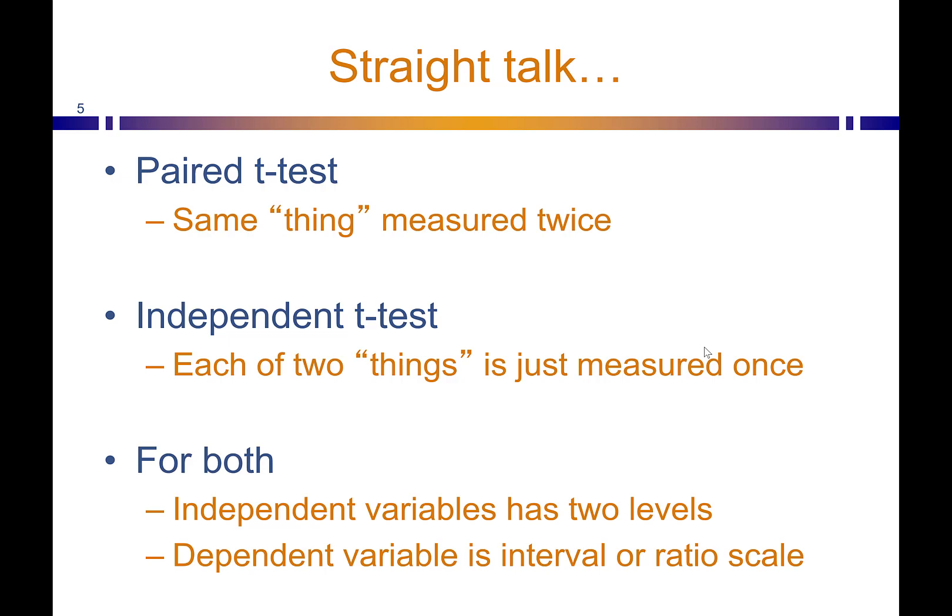This is different from independent samples t-tests, where two groups are each just measured once. For instance, men are measured and women are measured — that could be an independent samples t-test. There are even ways to set up this super shopper program as independent samples. For both of these tests, your independent variable has two levels and your dependent variable has the interval property of an interval or ratio scale and is normally distributed.